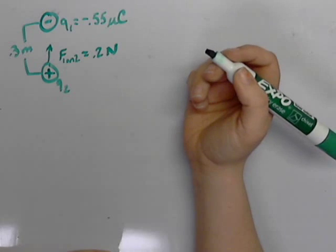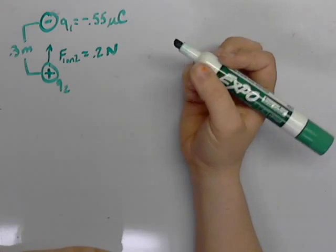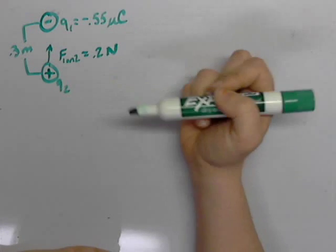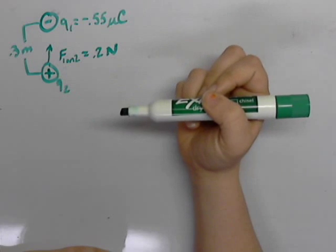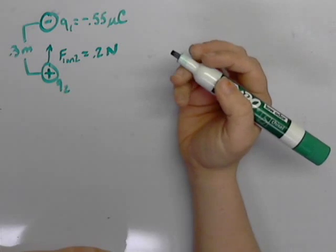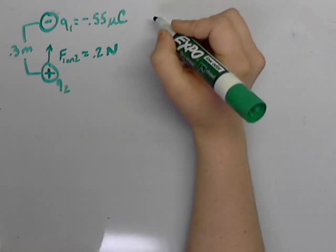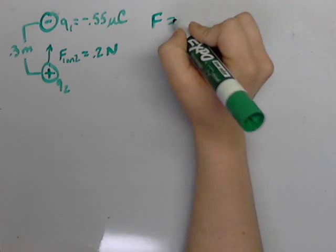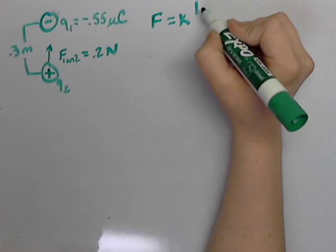Now to find the magnitude. We have Q1, we have a force, and we have a distance. From those variables that we already have, we know we're going to be using the Coulomb force, or Coulomb's law.